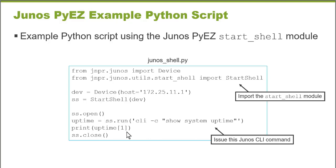The retrieved output from the Junos device is actually a tuple. The first entry is a true or false value indicating whether the command was successfully run, followed by the actual data, indexed starting from zero. So I want to print the second part of the output — index 1 — which is the actual Junos CLI output. Then, following good principles, I close the connection. It's a very simple script; the Junos PyEZ library and modules handle all the processing and do all the work.